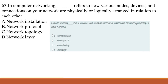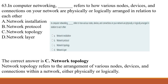Question 63: In computer networking, blank refers to how various network devices and connections on your network are physically or logically arranged in relation to each other. A) network installation, B) network protocol, C) network topology, D) network layer. The correct answer is C, network topology. Network topology refers to the arrangement of various network devices and connections within a network, either physically or logically.